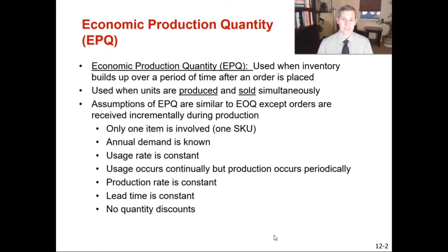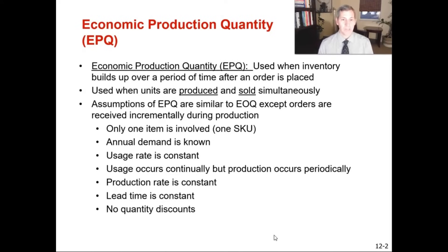Some similarities between the models are that only one item or SKU is involved, annual demand is known, usage rate is constant, production rate is constant, lead time is known and constant, and there are no quantity discounts available. The big difference is that usage occurs continually but production occurs periodically — that is the key difference between the EPQ and the EOQ model.